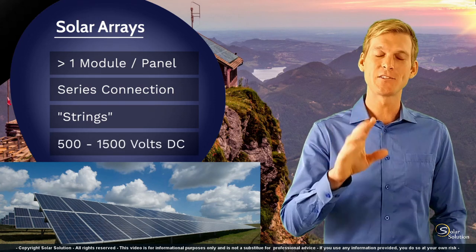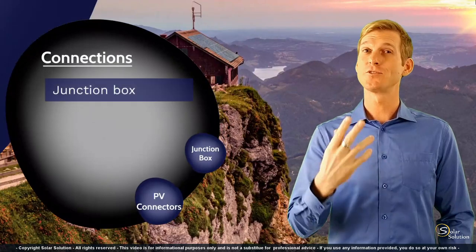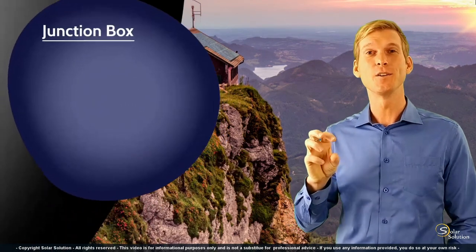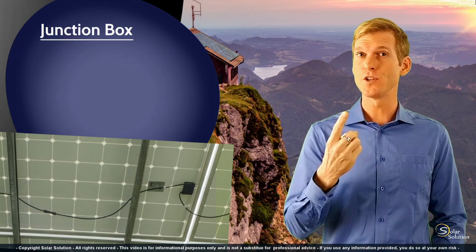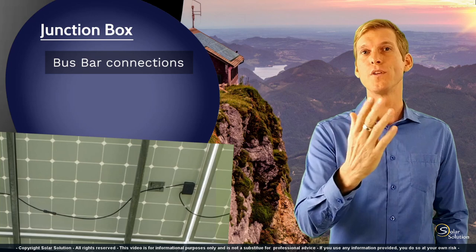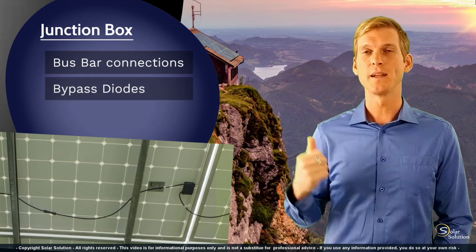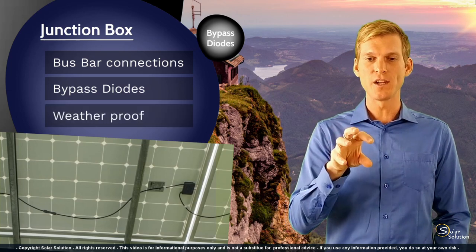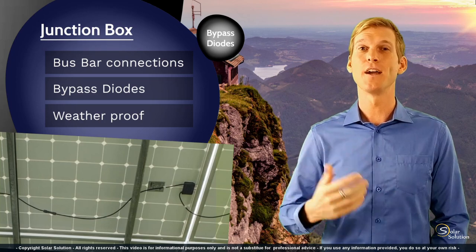Now let's look at the last section: connections — specifically junction boxes and external connectors. Junction boxes are the plastic black boxes glued to the back side of solar panels, attached to the backing sheet, and they have three functions. First, they connect the external wiring with the bus bars coming from all the solar cells on the front. Second, they contain the bypass diodes. Third, they are weatherproof — they ensure there's no connection between the internal electrical components and the outside environment.